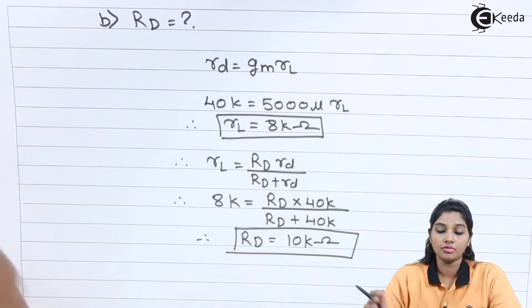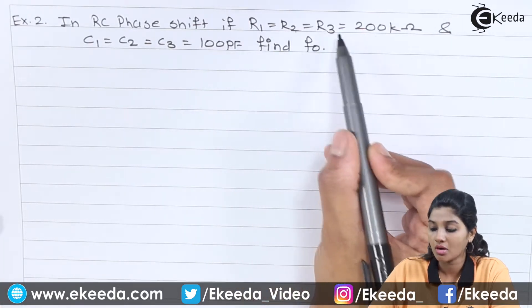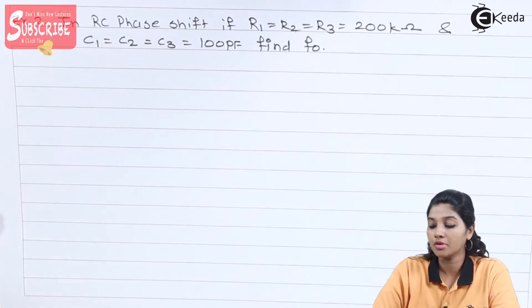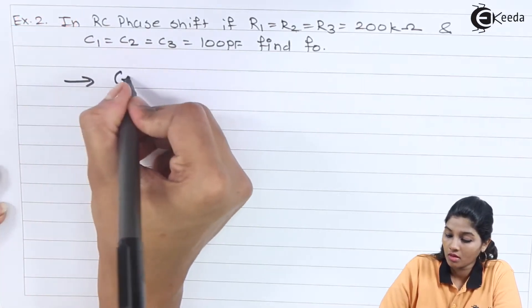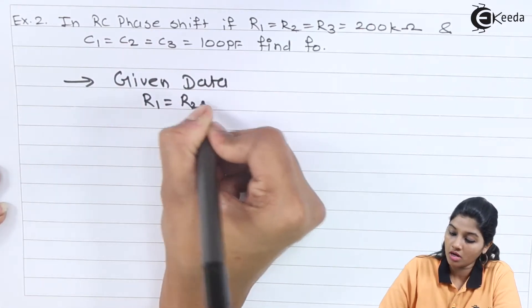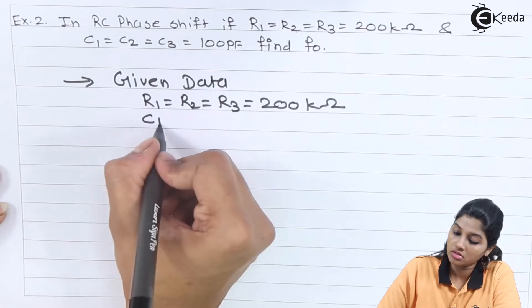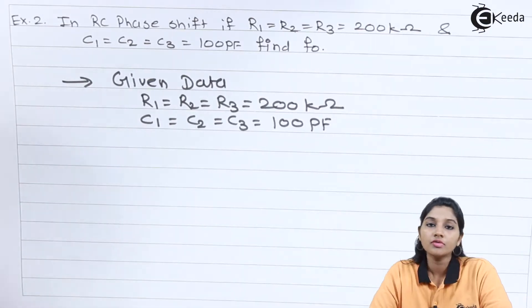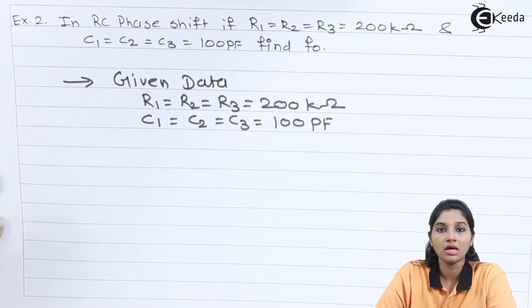Now let's see the next problem. The statement of second problem is: in RC phase shift oscillator, if R1 equals R2 equals R3 equal to 200 kilo ohms and C1 equal to C2 equals C3 equals to 100 pico farad. Therefore we need to consider three values of resistor and three values of capacitor. As they are equal then we can directly used it as one value only.